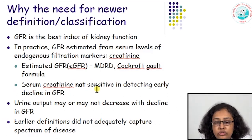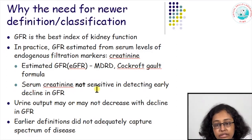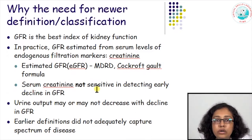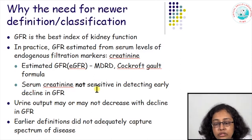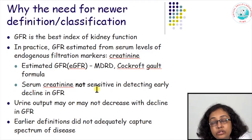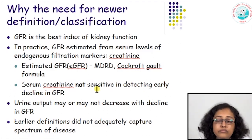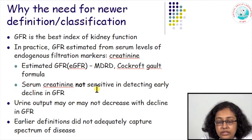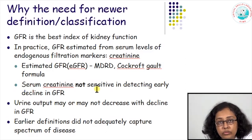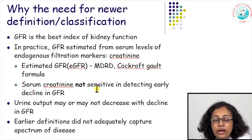Why was a newer definition and classification required? Normally creatinine and blood urea are used to measure kidney function, but GFR is the best index. The GFR, or glomerular filtration rate, is the volume of plasma filtered by the kidneys per unit time. Actually measuring GFR is cumbersome and not practical at the bedside. So what is routinely done is measuring endogenous filtration markers like serum creatinine and calculating GFR using creatinine and other parameters like age, gender, and race — the estimated GFR — using formulas like the MDRD formula and the Cockcroft-Gault formula. Serum creatinine is not very sensitive in detecting early decline in GFR.